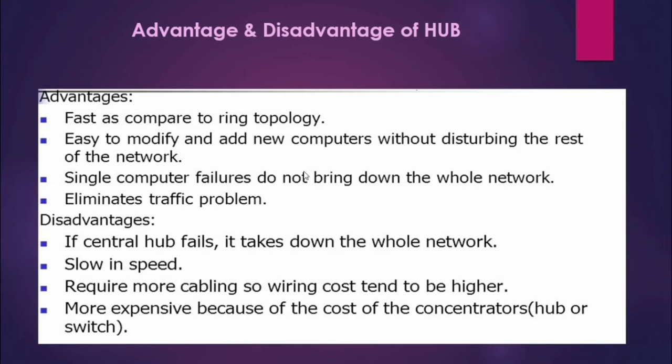The hub is more expensive because of the cost of concentrators like hubs or switches. If the central hub fails, it takes down the whole network. Data transmission speed is slow, and it requires more cabling, meaning much more cable is needed for wiring, so the cost will be higher than a normal connection.